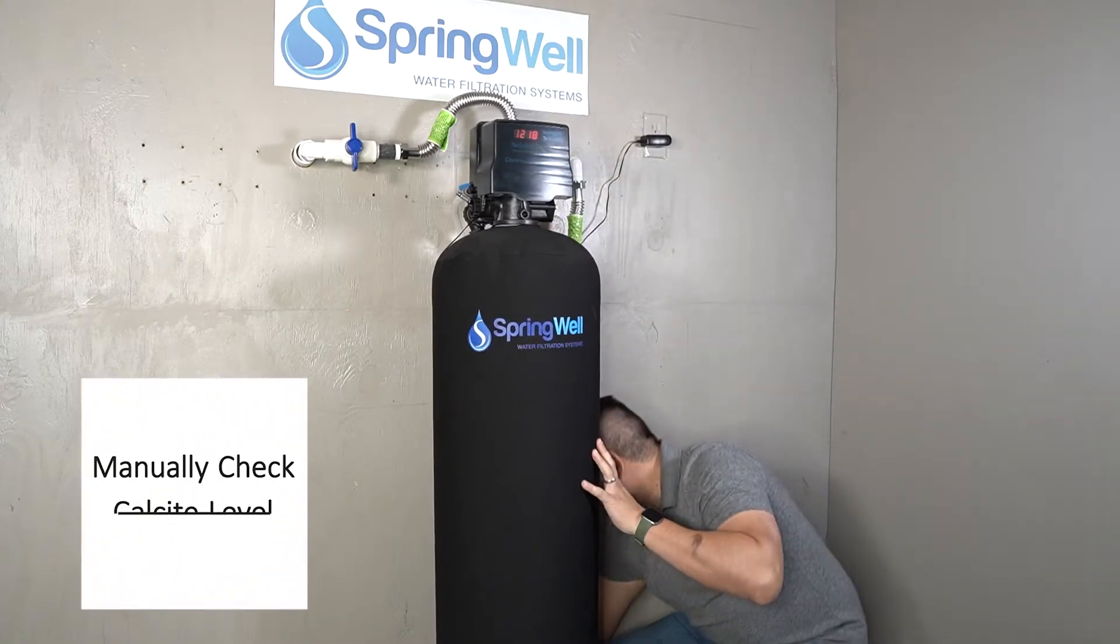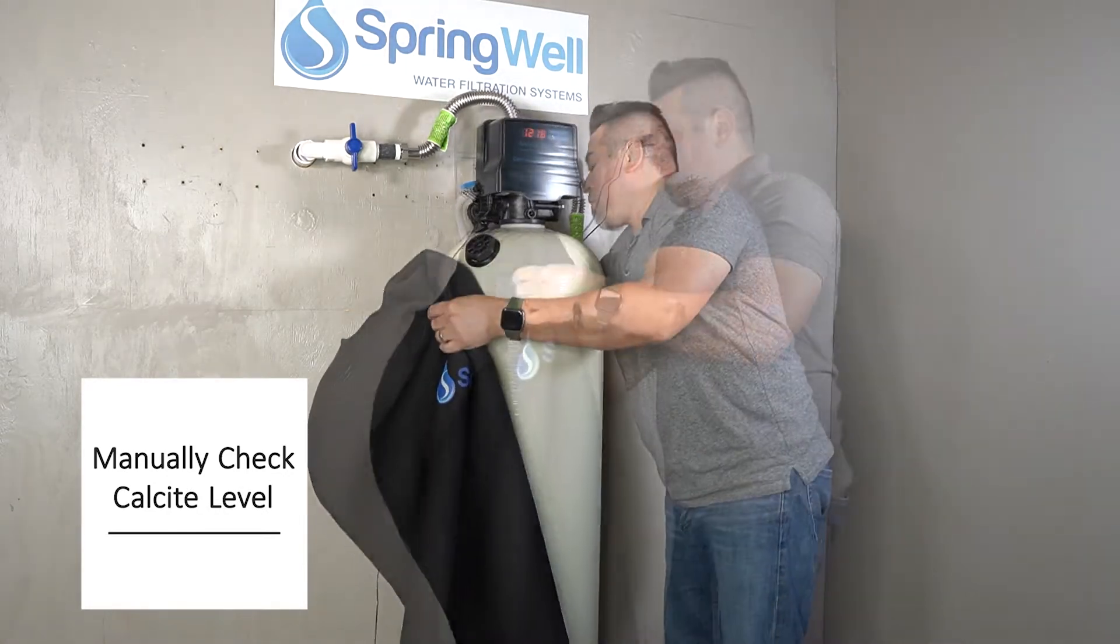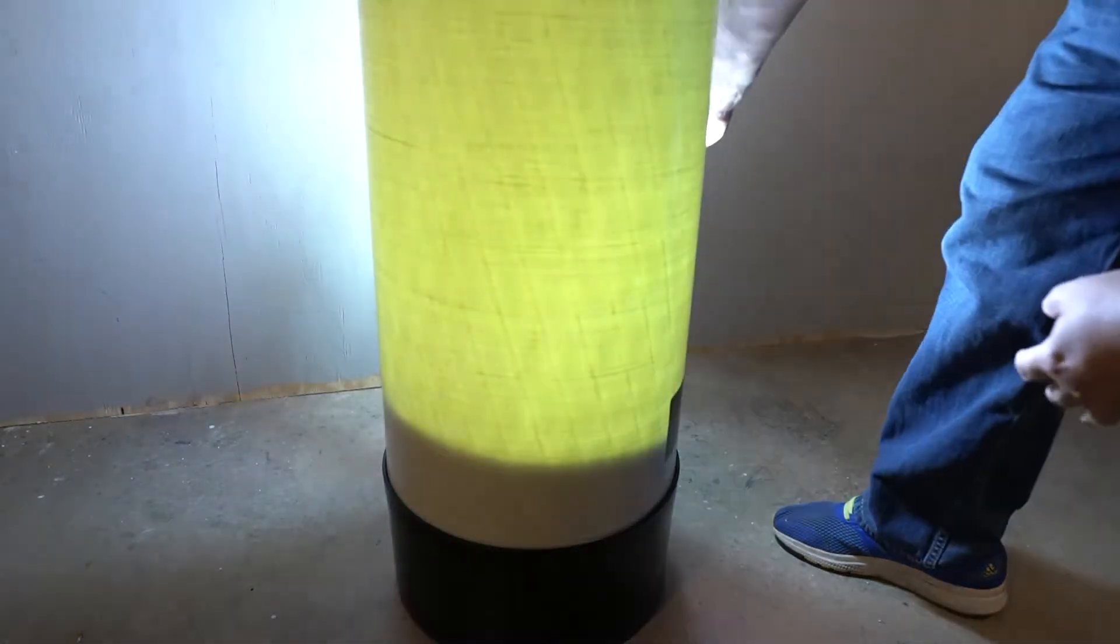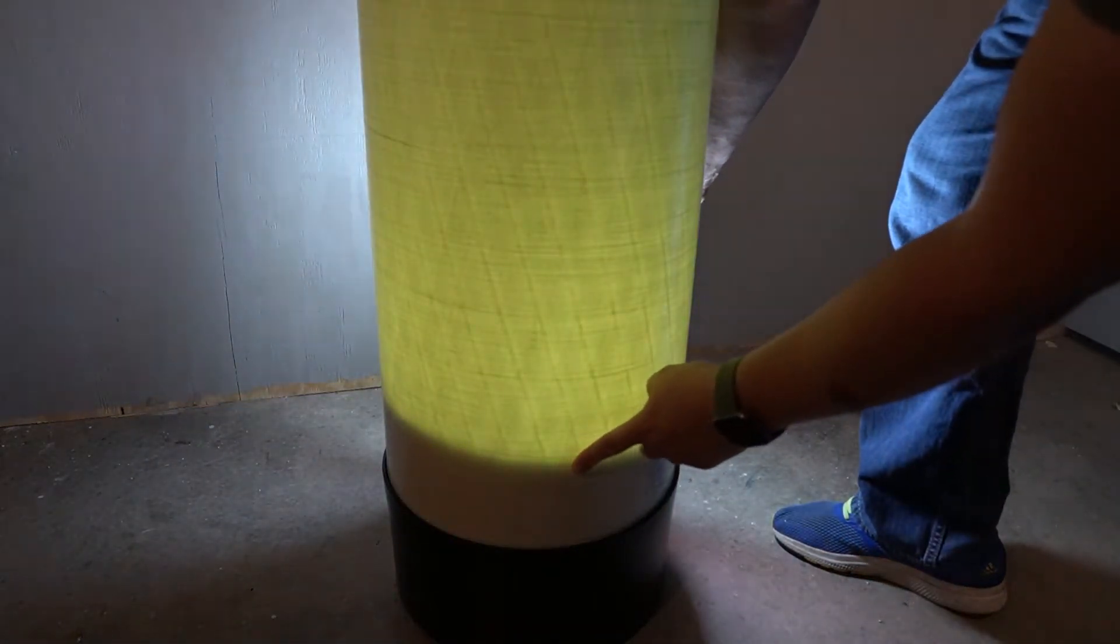Checking the calcite level in the tank is a manual process. Begin by removing the jacket. Use a light source, like a flashlight, to illuminate the tank. This will show you the calcite level.